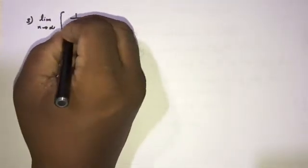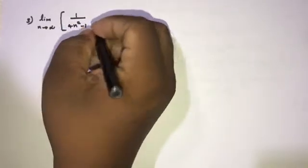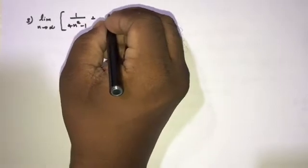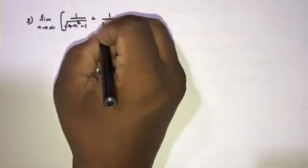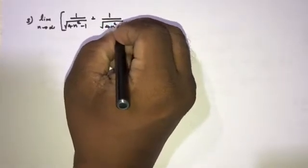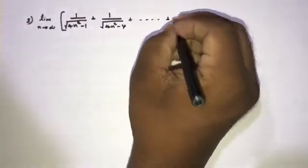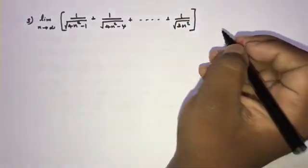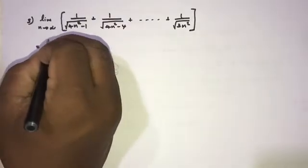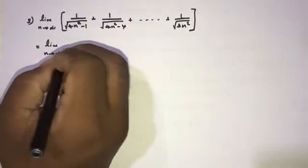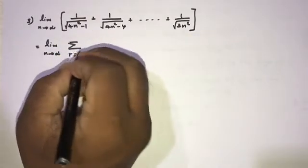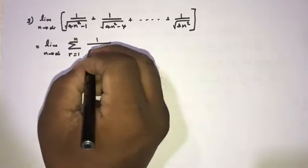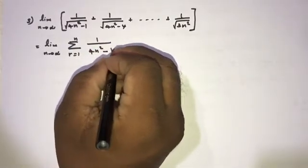Example 3: limit n→∞ of [1/√(4n²−1²) + 1/√(4n²−2²) + ... + 1/√(3n²)]. We can write this using sigma notation: limit n→∞ of sum (r=1 to n) of 1/√(4n²−r²).